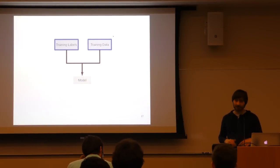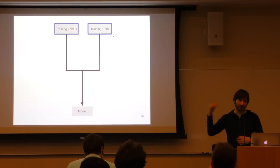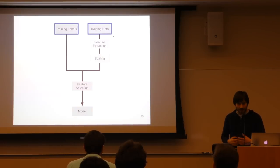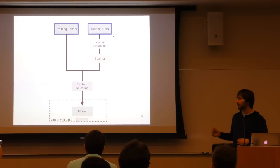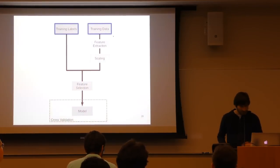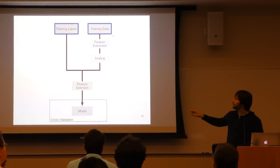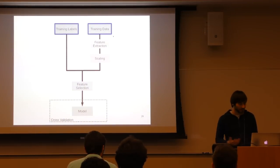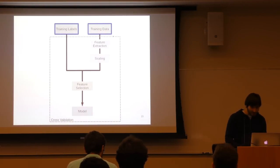Usually your raw data is quite different from what you want to feed your model. There are steps like feature extraction, scaling, and feature selection in between. A mistake people often make is doing cross-validation or parameter estimation only around the model, not including those earlier steps. The problem is that if your cross-validation test part was already used in feature extraction or scaling, you're cheating and your generalization error estimate will be very optimistic. What you should do is cross-validate over your entire pipeline including feature extraction.